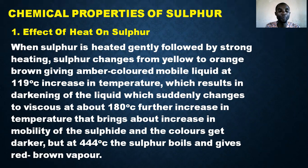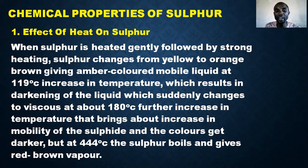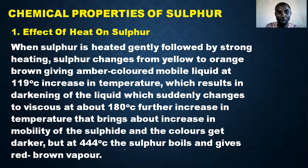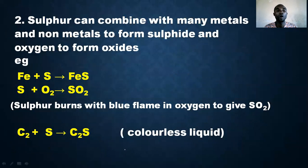As temperature continues to increase, at 444 degrees Celsius the sulfur boils and gives brown-red vapor. Heat thus has a significant effect on the color and physical state of sulfur, transforming it through various stages as temperature rises.